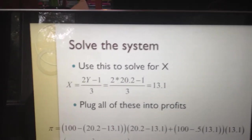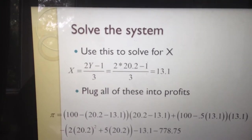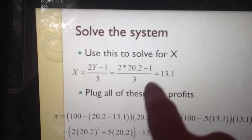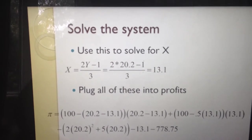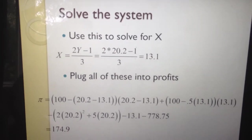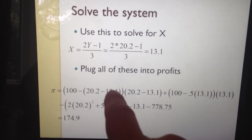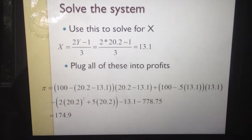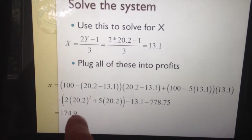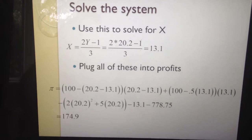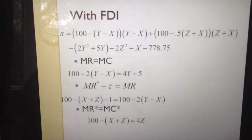How much is exported? Using the earlier equation and plugging in y = 20.2, we get x = 13.1 exported to the UK. Now we know y and x, so we plug all of that into the profit equation and compute: profits equal 174.9 for a firm that does not do foreign direct investment.